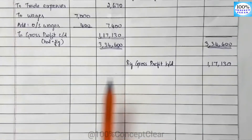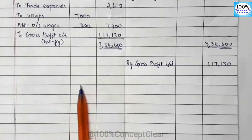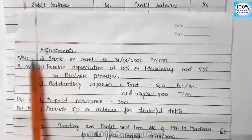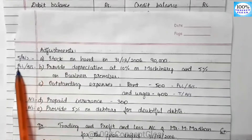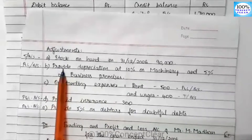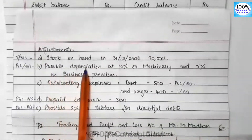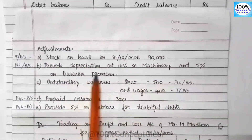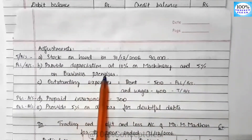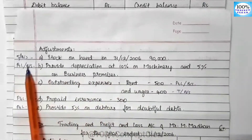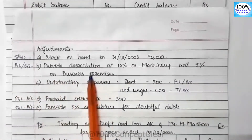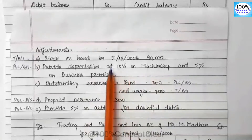Now we have to open the Profit and Loss account, carrying the gross profit of $1,17,130. We will enter the adjustment items into the P&L account. The second adjustment is to provide depreciation at 10% on machinery and 5% on business premises — this depreciation is a P&L account item.